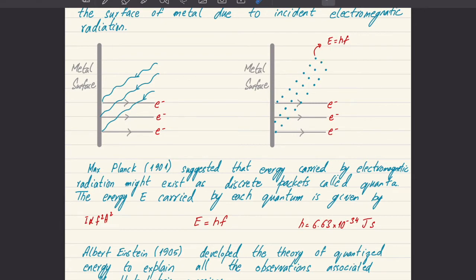Electromagnetic radiation requires a minimum frequency called the threshold frequency to cause photoelectric emission. That is because a single photon interacts with a single electron. If each photon carries enough energy required by the electron to break the lattice, then only photoelectric emission would occur. The minimum amount of energy associated with the threshold frequency that can cause photoelectric emission is called the work function energy.